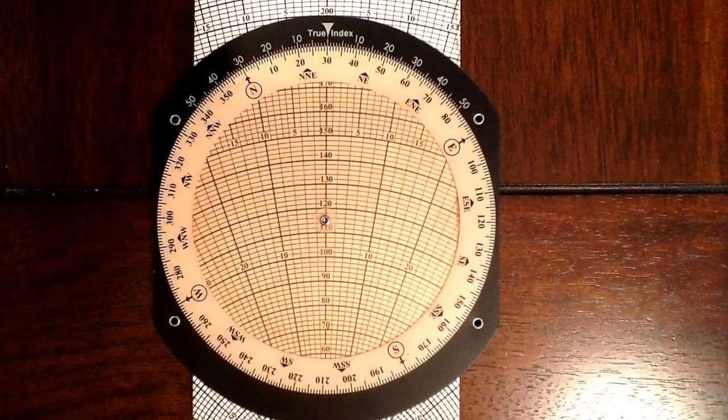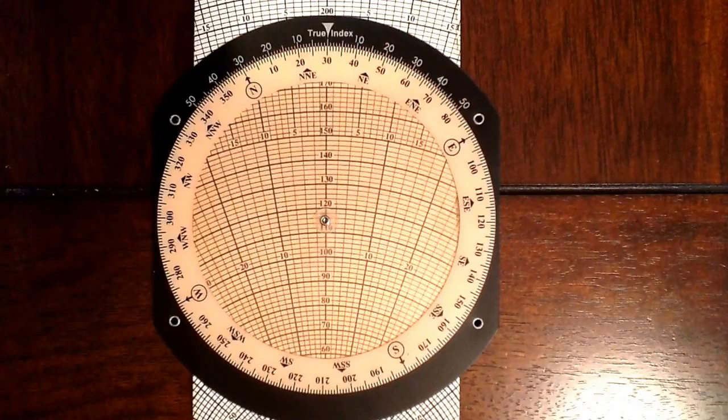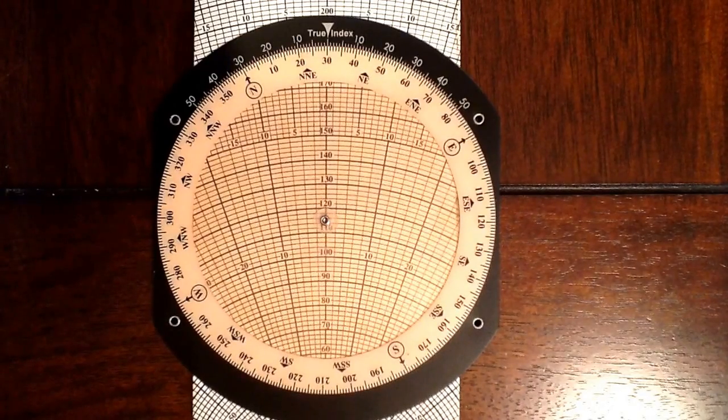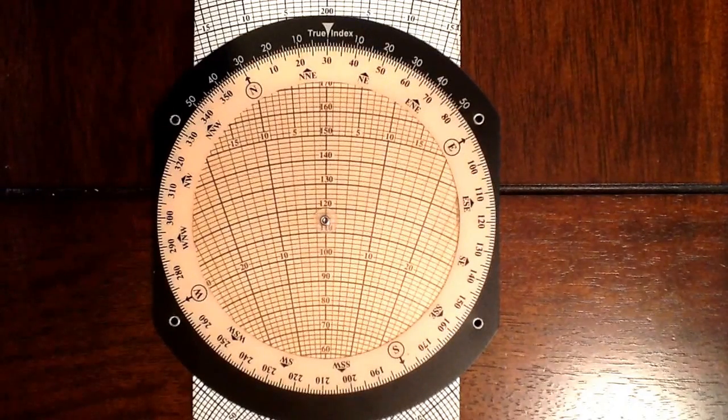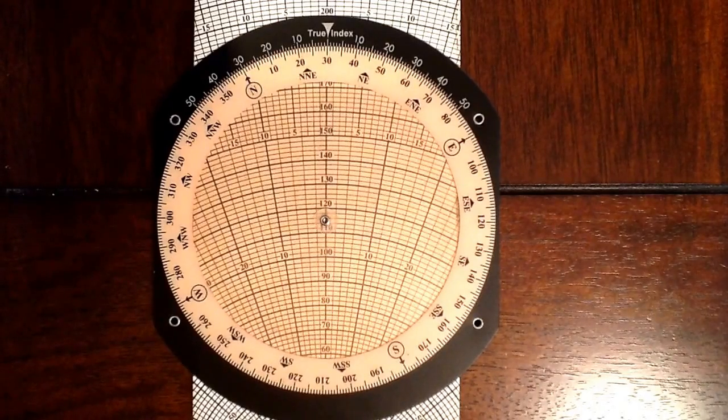The first method is needed for the private pilot knowledge test. The second, for the instrument pilot knowledge test. We're going to discuss the first method. Having wind information, we're going to determine aircraft heading and ground speed.